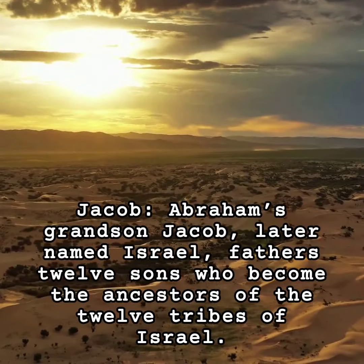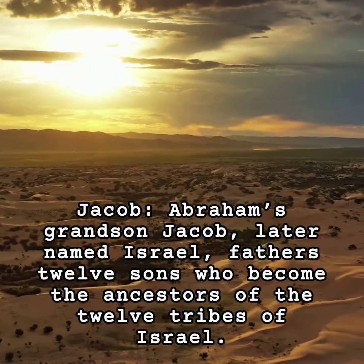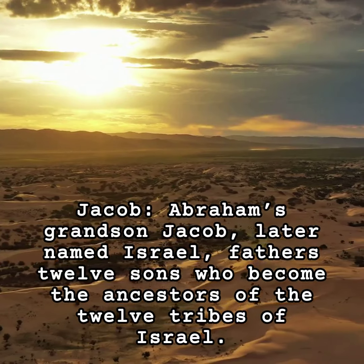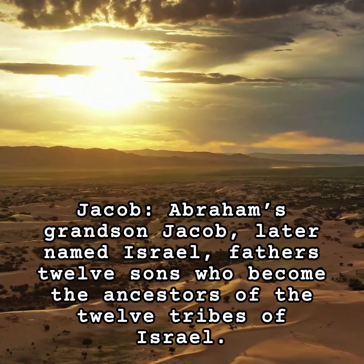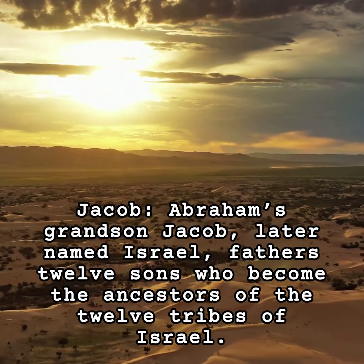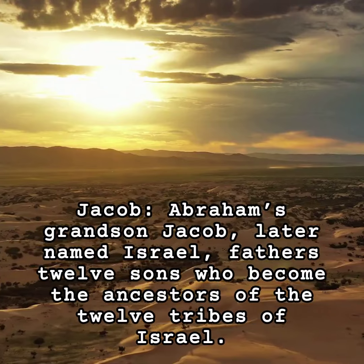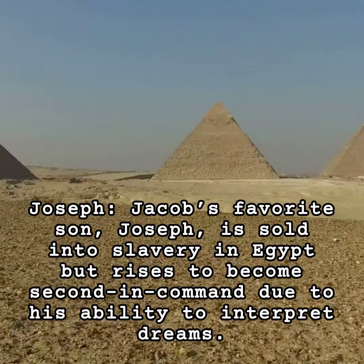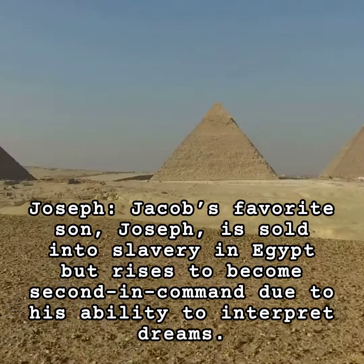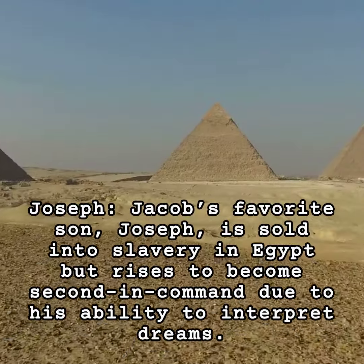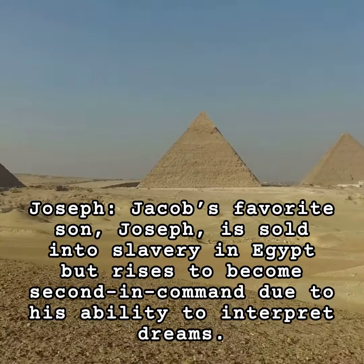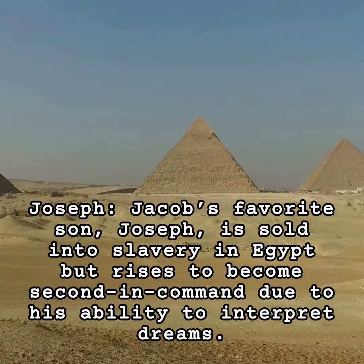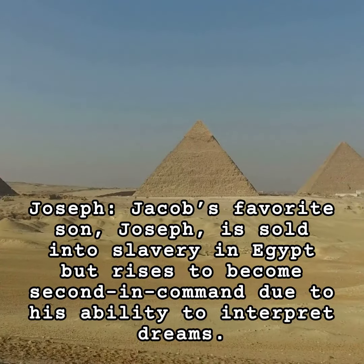Jacob: Abraham's grandson Jacob, later named Israel, fathers twelve sons who become the ancestors of the twelve tribes of Israel. Joseph: Jacob's favorite son Joseph is sold into slavery in Egypt but rises to become second in command due to his ability to interpret dreams.